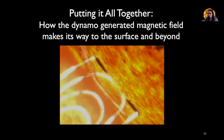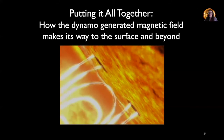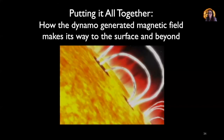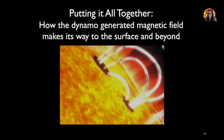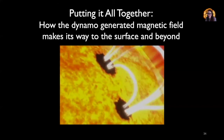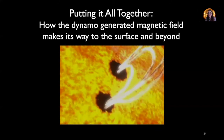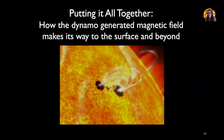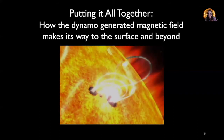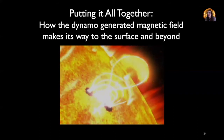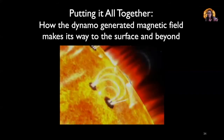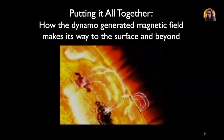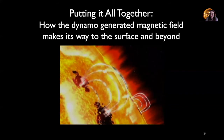That cloud then travels through the solar system, and sometimes it impacts the Earth. That's a bit more of the story about what happens with the sun and its magnetism as it impacts our solar system.